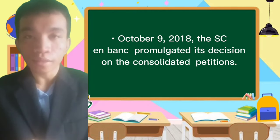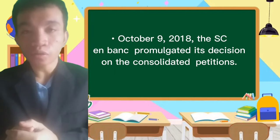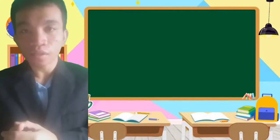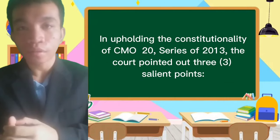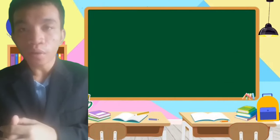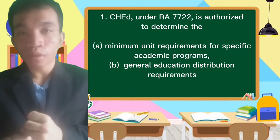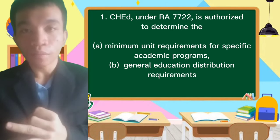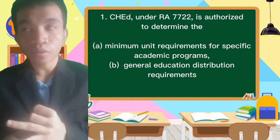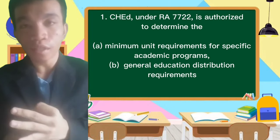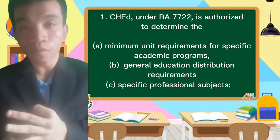On October 9, 2018, the Supreme Court promulgated its decision on the consolidated petitions. In order to support the constitutionality of CMO 20, Series of 2013, the Supreme Court pointed out three salient points. Number one, CHED, under RA 7722, has the right to determine: A) the minimum required units of a specific academic program; B) the general education distribution requirement; and C) specific professional subjects.